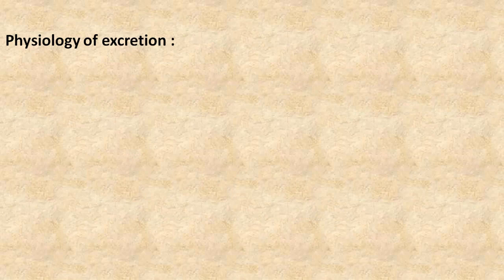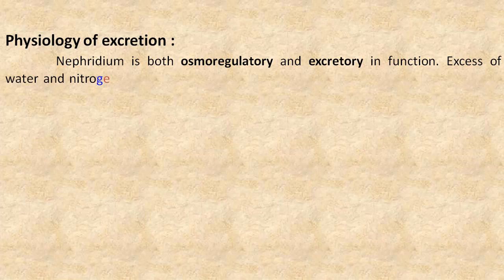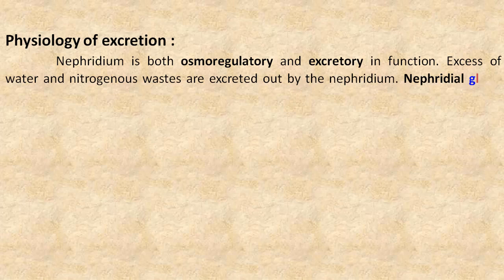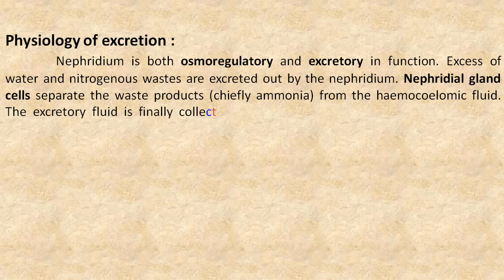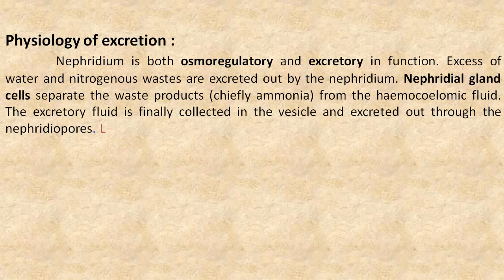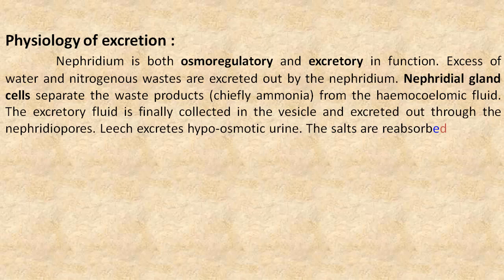Now we will see the physiology of excretion. The nephridium is both osmoregulatory and excretory in function. Excess water and nitrogenous wastes are excreted out by the nephridium. The nephridium gland cells separate waste products, chiefly ammonia, from the haemocoelic fluid. The excretory fluid is finally collected in the vesicle and excreted out through the nephridiopore. Leech excretes hypoosmotic urine, and salts are reabsorbed from the urine by the nephridial tissues.